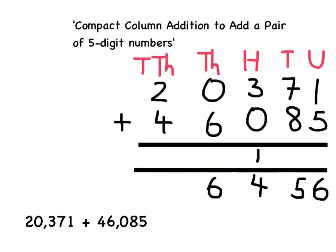Finally I've got to add up my ten thousands column. 20,000 add 40,000. Added together this makes 60,000 which I can show by writing a 6 at the bottom of the ten thousands column.